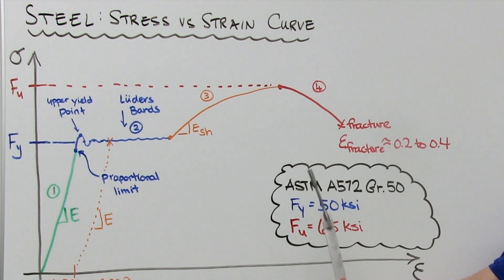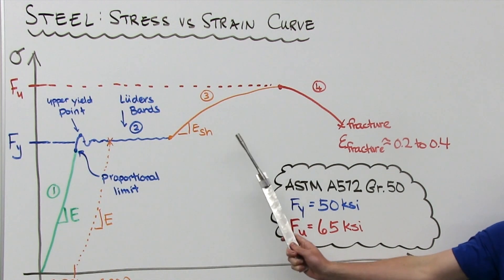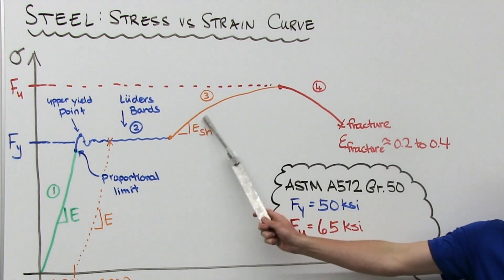That's right. All these dislocations that have been shifted get tangled at my grain boundaries, so it requires an even higher force to cause further deformation. Hence the term, strain hardening.